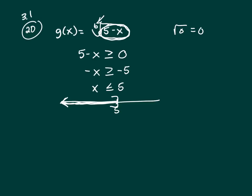And the interval notation is always where your solution set starts and where it ends. So this solution starts at negative infinity, and that's a parenthesis. And it goes up to 5, and 5 is included because you can take the square root of 0. So this is your domain.